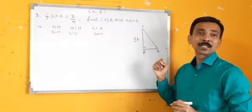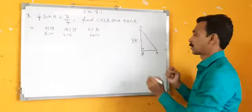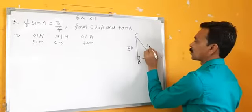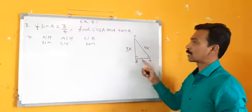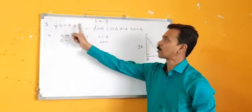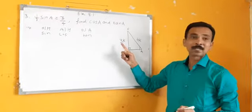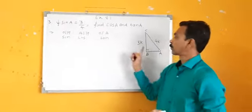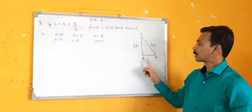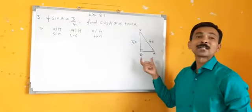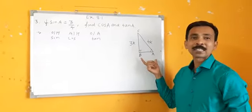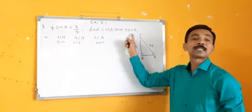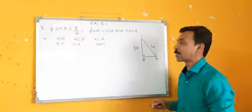So we have to put a constant. And upon hypotenuse means 4K, because sin A is equal to 3 upon 4 — sin is opposite upon hypotenuse. We have to find the third side, because unless and until we find the third side, we cannot find these trigonometric ratios.